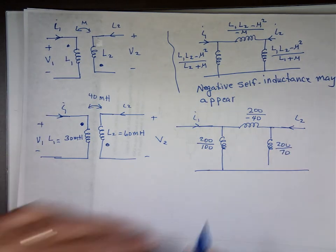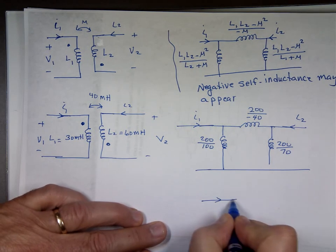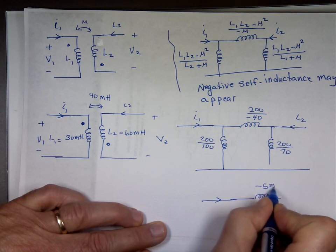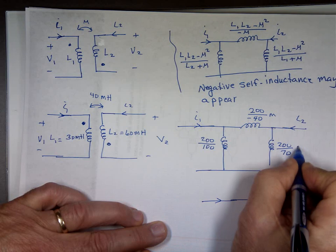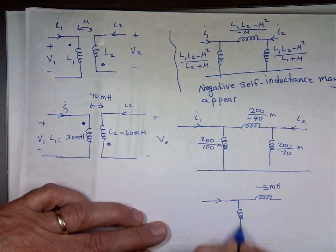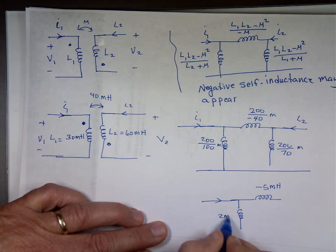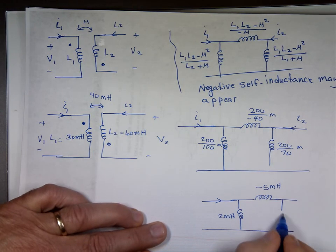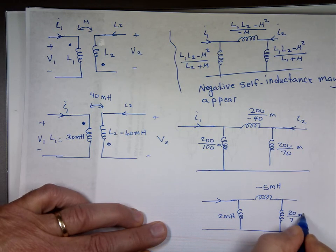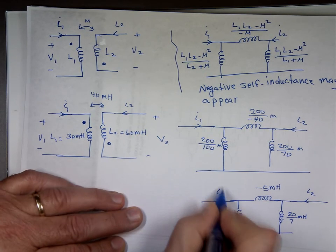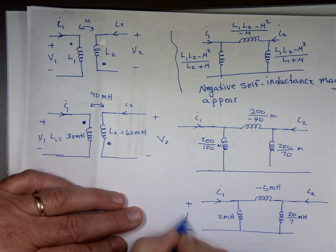So the equivalent value of that will be negative 5 millihenry. All these are milli, negative 5 milli. This will be 2 milli. This will be 200 over 70 milli. And this will be 20 over 7 milli. This is I sub 2 going in, this is I sub 1. This is V1, and this is V2.